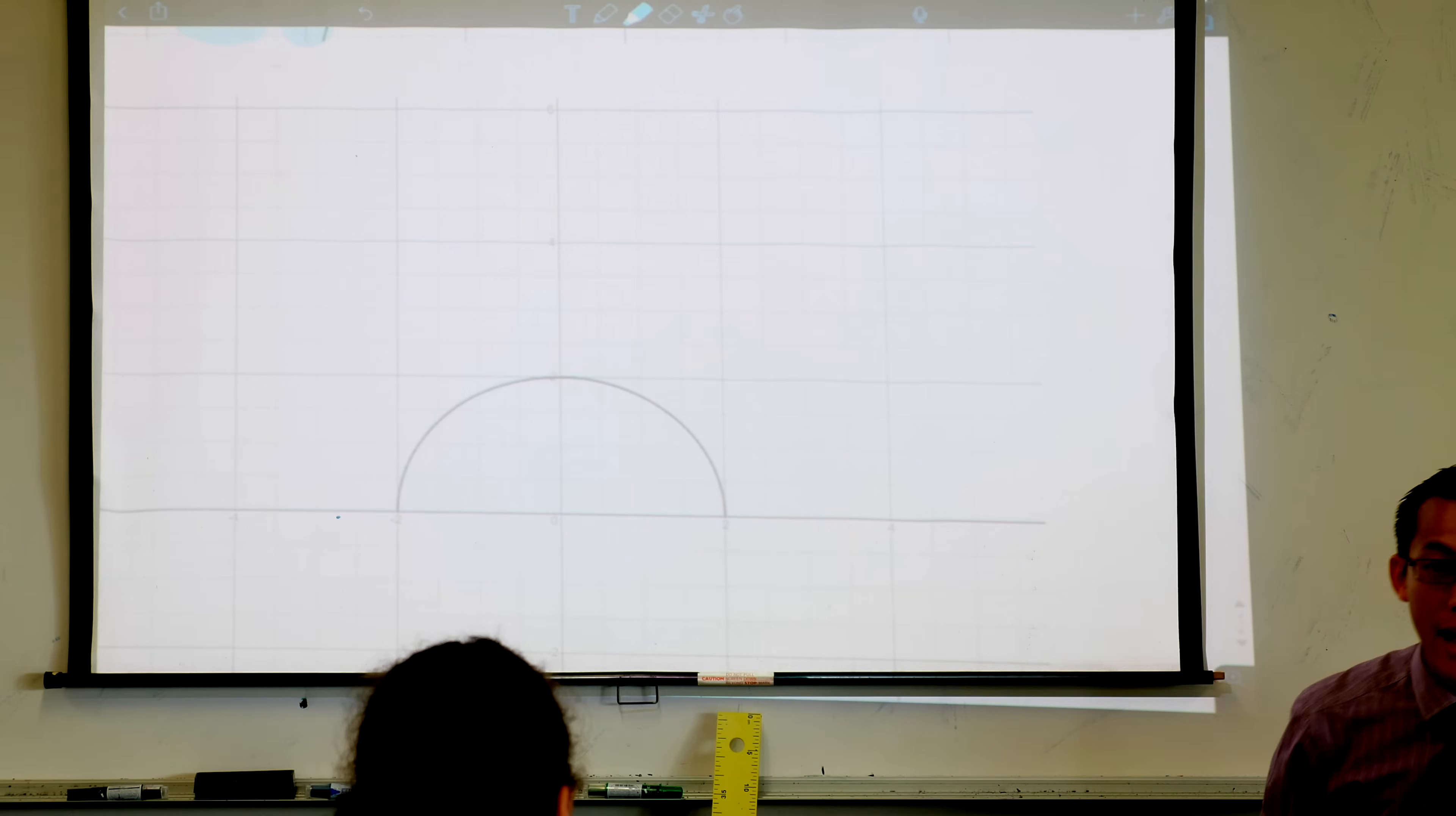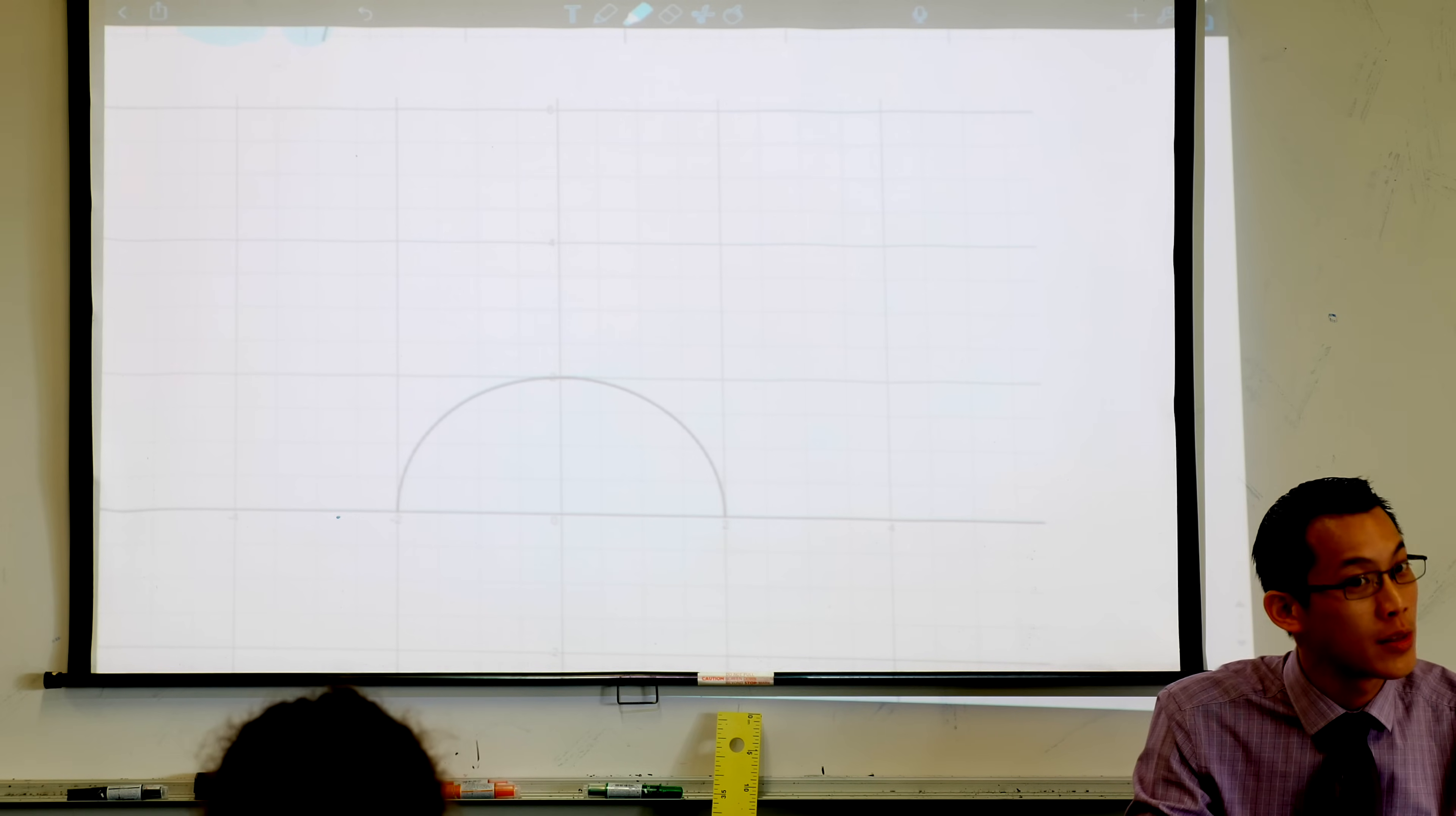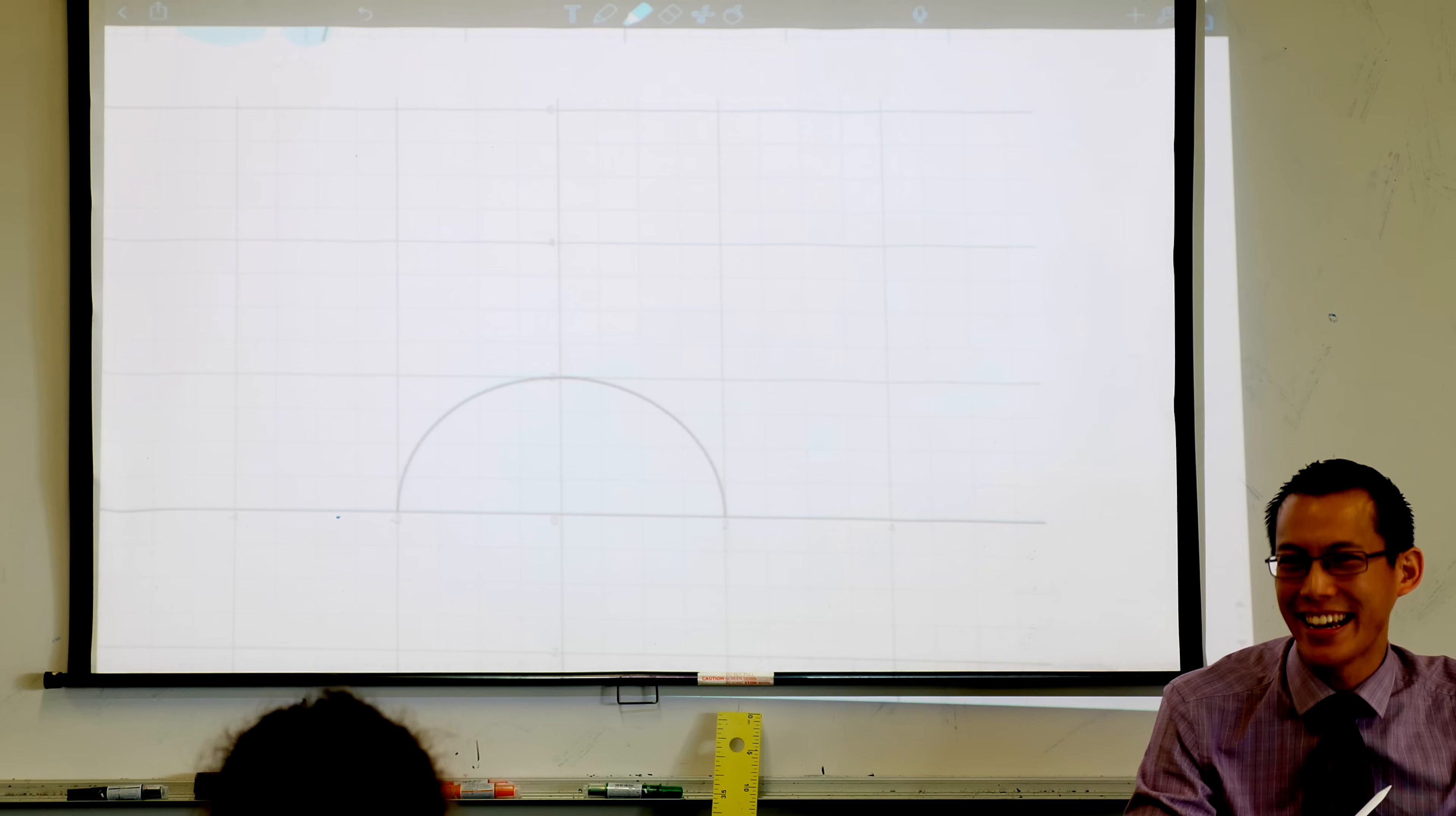Number one, does this thing have some symmetry? It does. In fact, it doesn't just have any symmetry. It has a particular kind. It has a name. What kind of symmetry is it? Start to the knee. This is even symmetry, right? You're like, yes, nailed it. Okay.